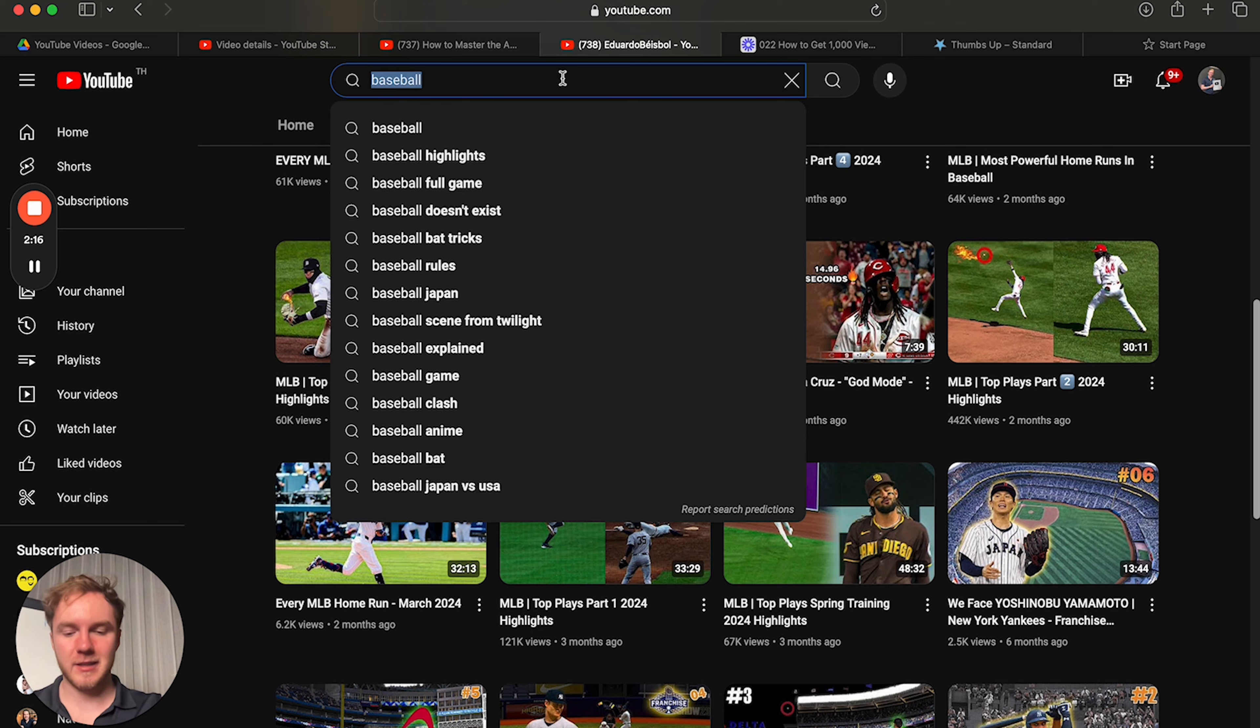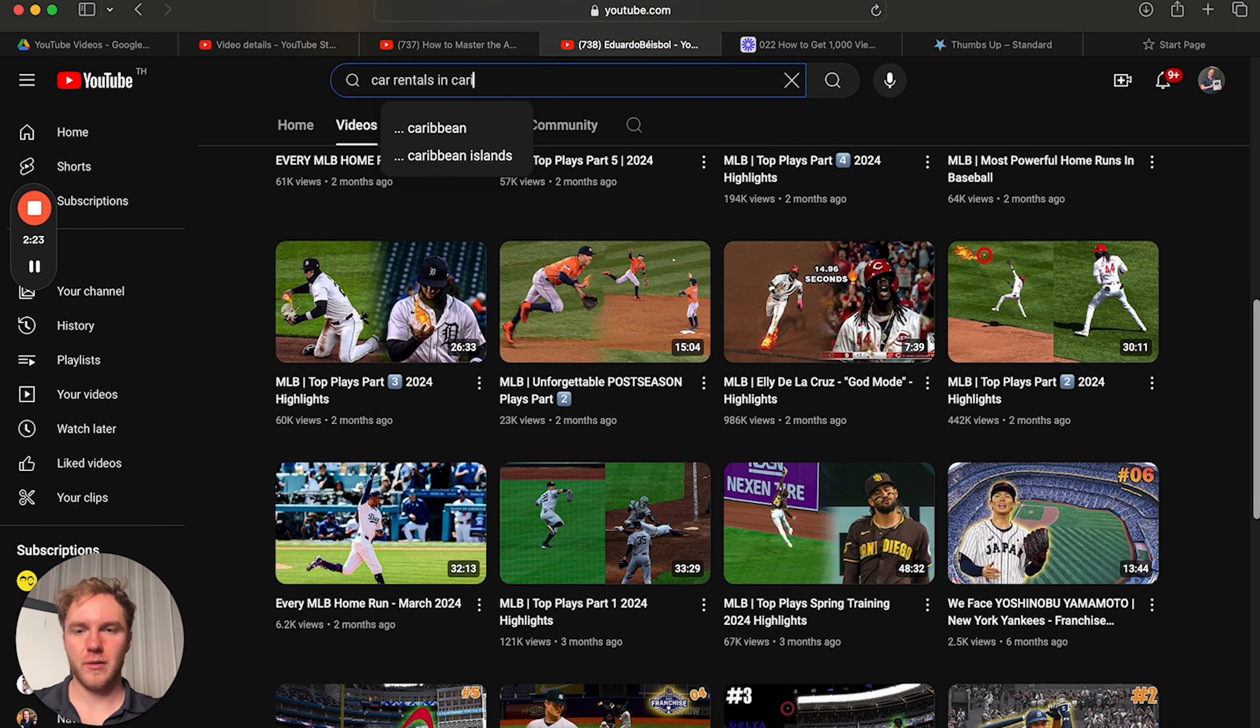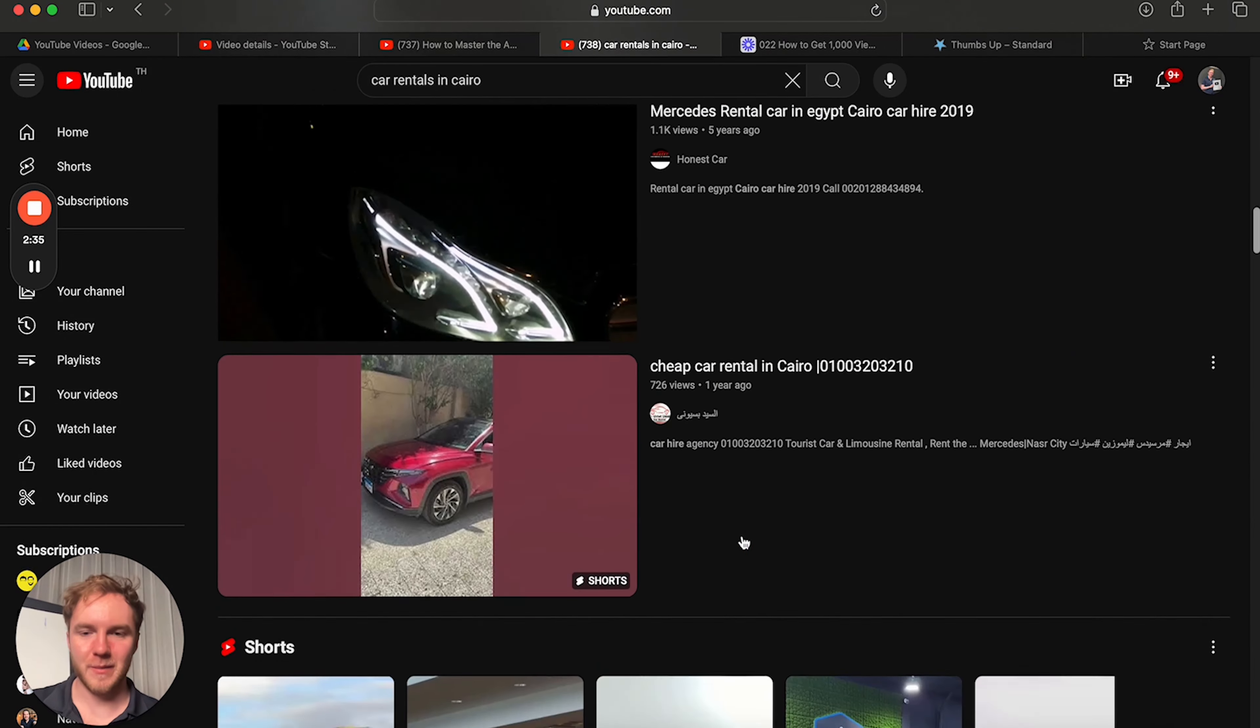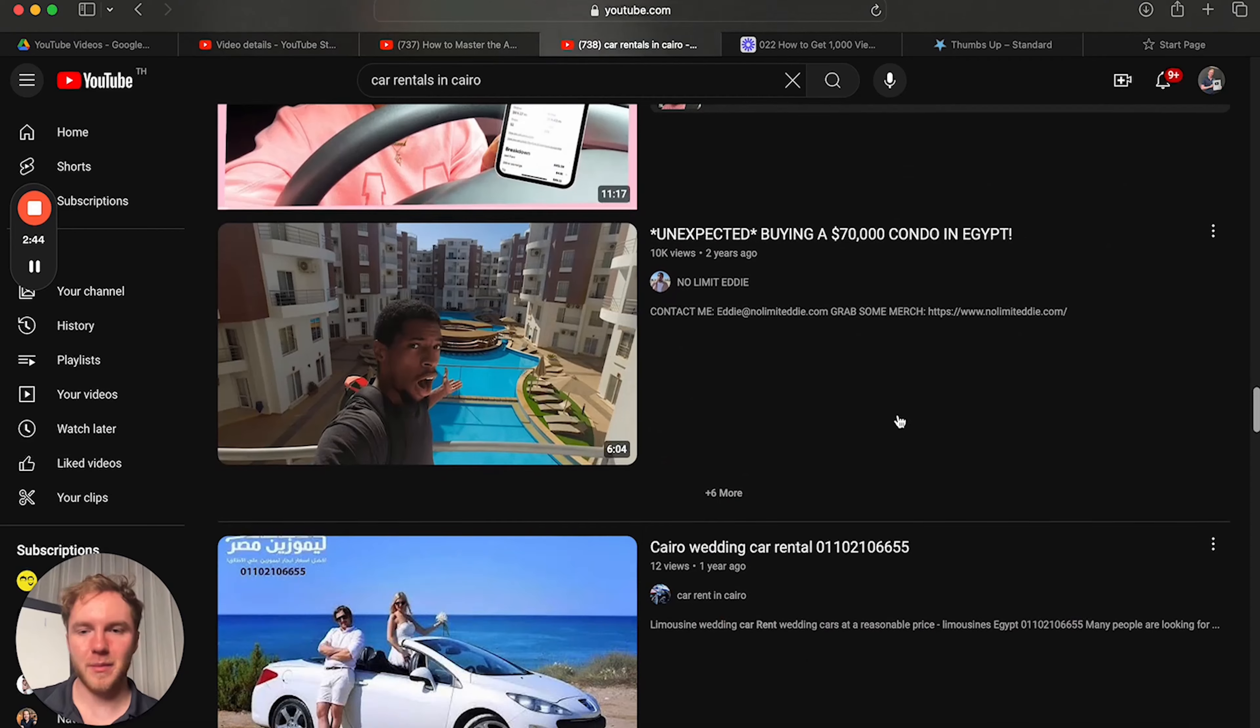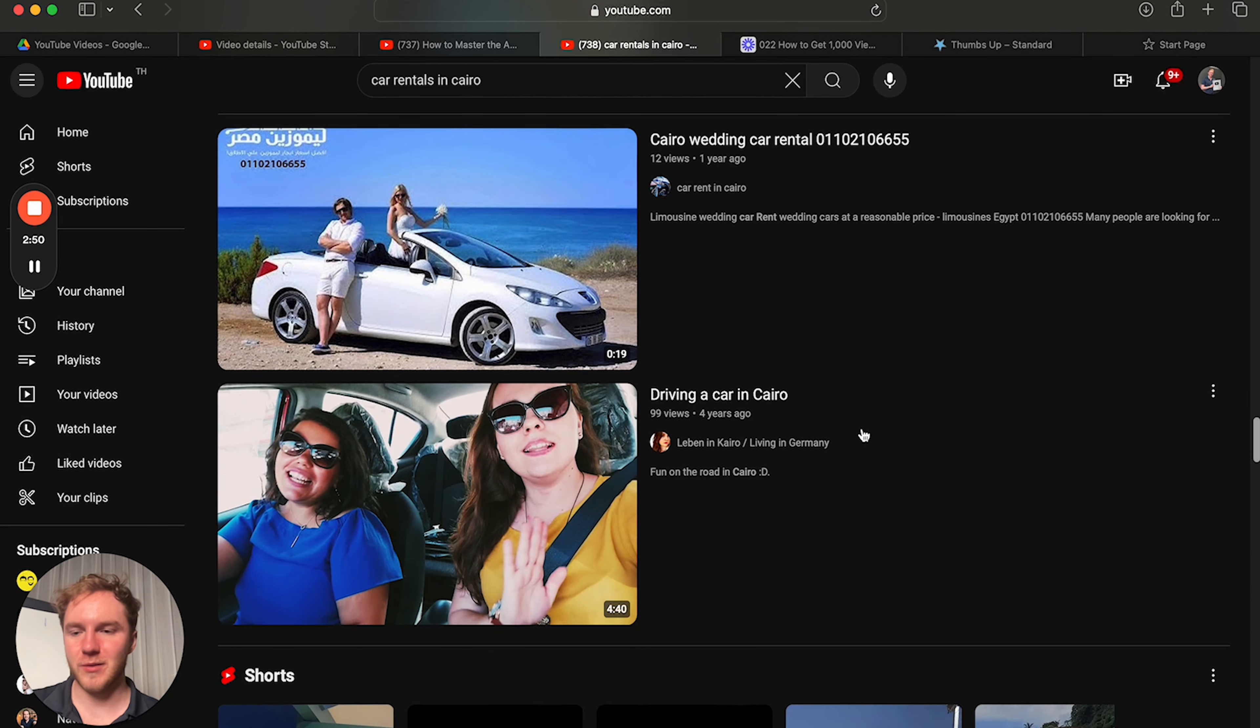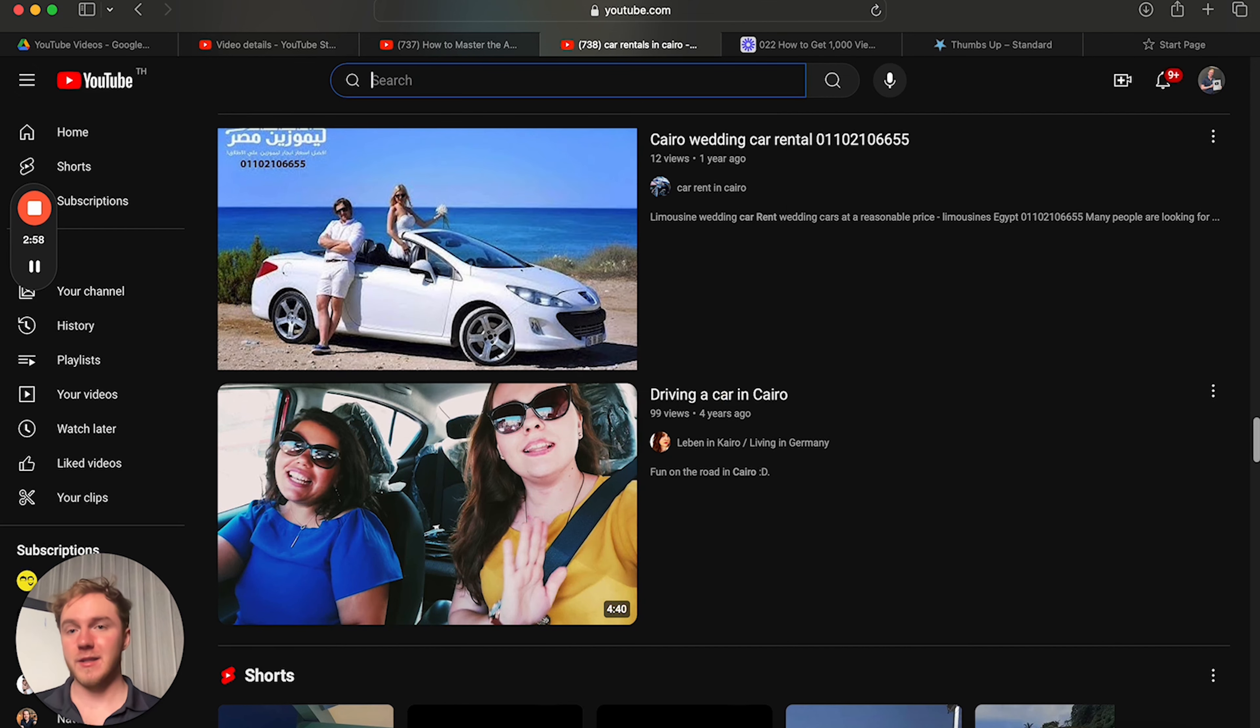But if we were to look up another niche, like let's say car rentals in Cairo, clearly there is not that many views to be had here. There's rental car ones, but not in Cairo. This is probably not a very good niche to go into. 12 views, 99 views, nothing crazy, right? So this is an extreme example, but you really don't want to go into a niche that has no view potential.